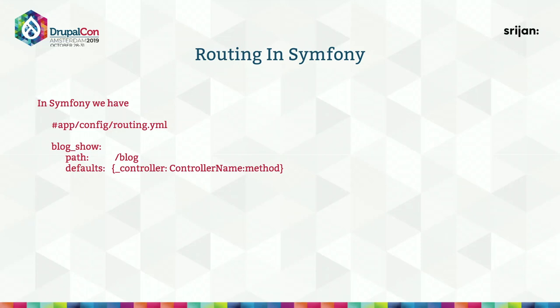Most of us may have worked with MVC frameworks, and some with Symfony specifically. For those who haven't, this slide outlines how routing works in Symfony. There is an app controller, a config directory, and a routing.yml file. A route like 'blog_show' is mapped to the path slash blog. Whenever slash blog is hit, the controller name is called and the method is invoked. This is how routing works in Symfony.